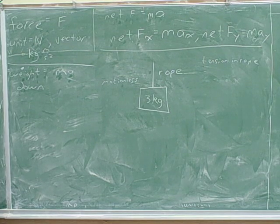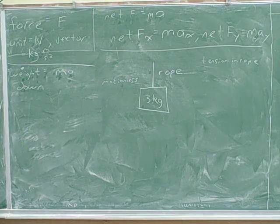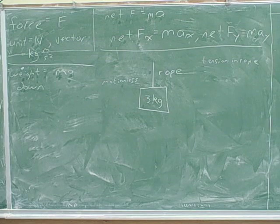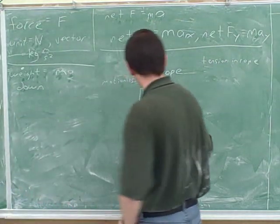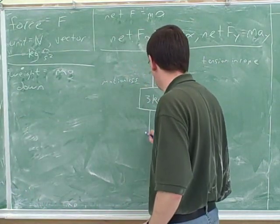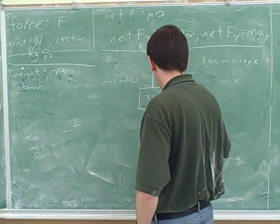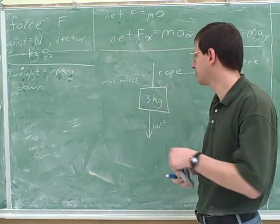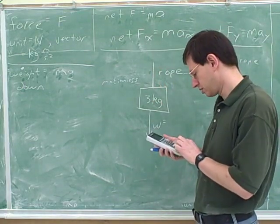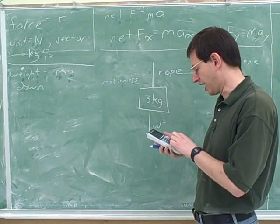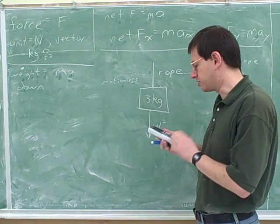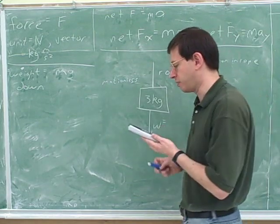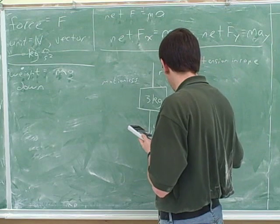How do we identify forces on an object? First of all, everything has a weight. What is the direction of the weight? Down. And how would I calculate the weight of this object? I'll do 3 times 9.8, which is 29.4.